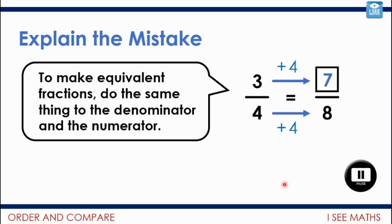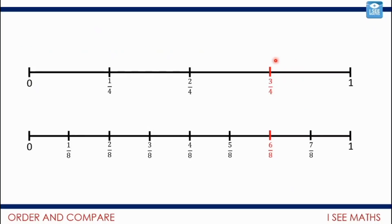Well, let's compare three quarters to seven eighths and to what the answer should have been. Three quarters is actually equivalent to six eighths — I don't just do the same thing to the numerator and denominator, I have to multiply by the same number. This line is split into four pieces; this one into eight pieces. To work out quarters in eighths, I multiply top and bottom by two because it's doubling — each section has double the number of pieces. Seven eighths is not the same as three quarters, it's larger. Three quarters equals six eighths. They're equivalent.